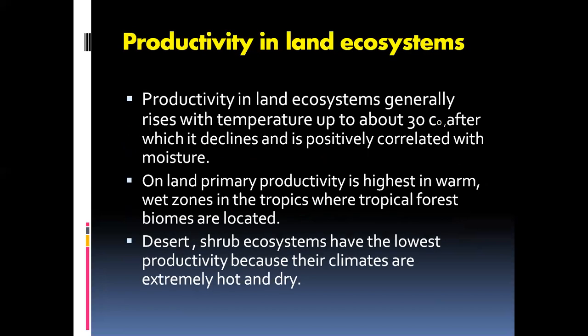There are various types of ecosystems on Earth, broadly divided into two major categories: land ecosystems and aquatic ecosystems. Aquatic ecosystems involve water environments like rivers, oceans, lakes, and streams. Productivity in land ecosystems generally rises with temperature up to about 30 degrees Celsius, after which it declines, and is positively correlated with moisture.